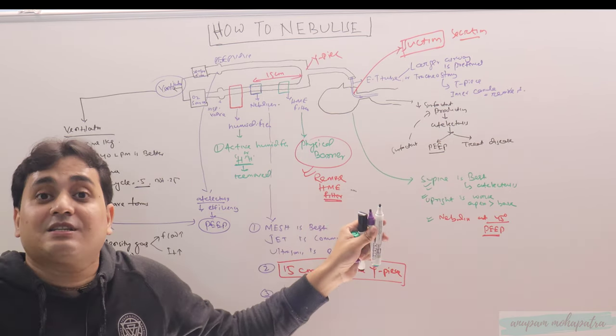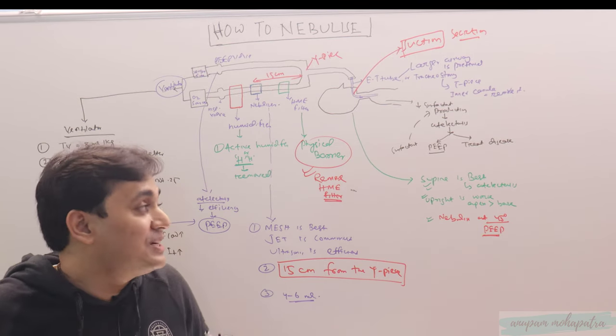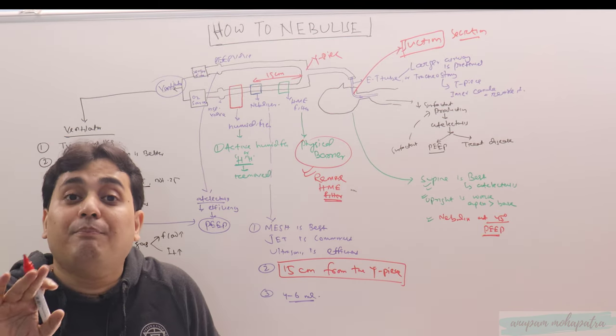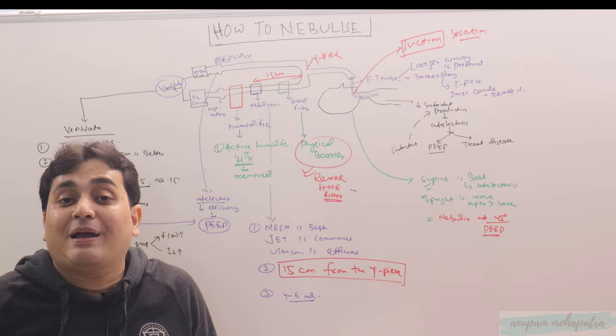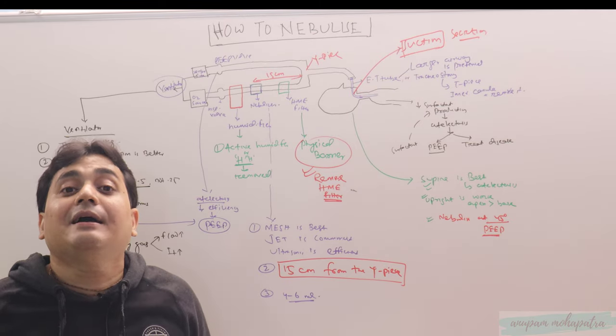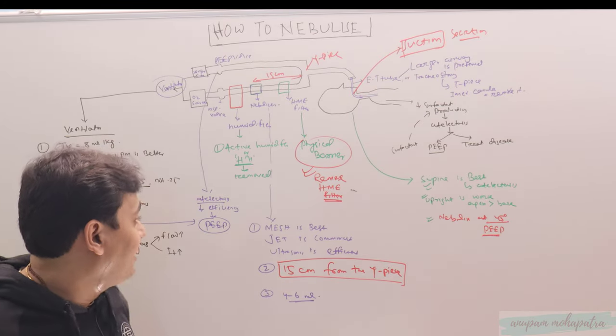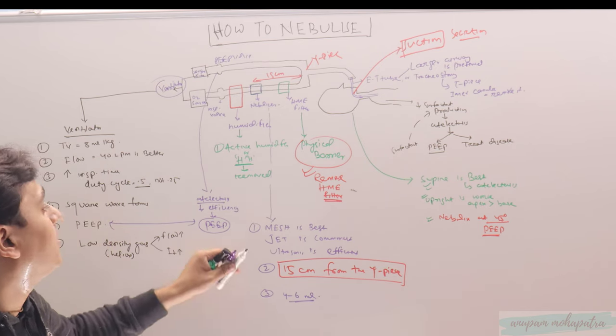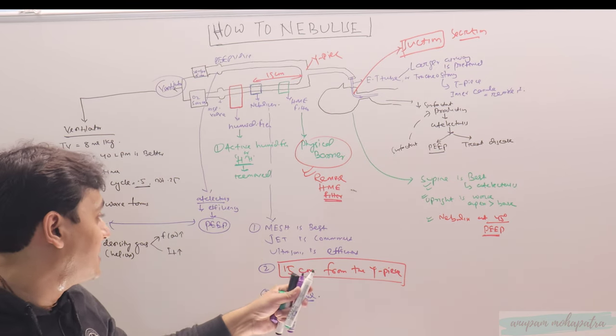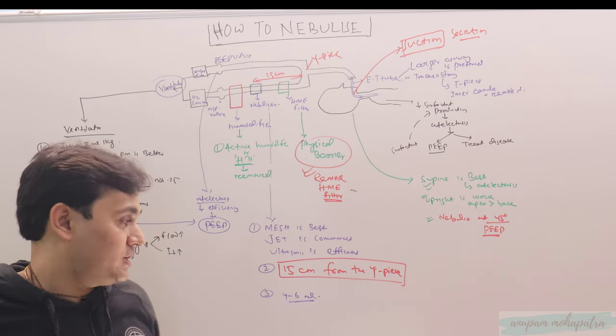Larger airways are always preferred. If you have a tracheostomy, use a T-piece and remove the inner cannula. If there is surfactant production issues, if the person is having atelectasis, use PEEP and treat the disease. Supine is best but cannot be done in atelectasis, so maximum is 45 degrees propped up along with PEEP. And of course, mesh is the best, jet is commonest, ultrasonic is efficient.